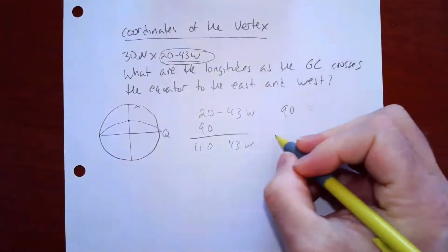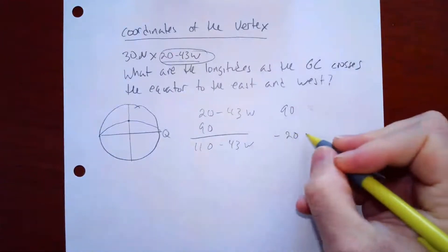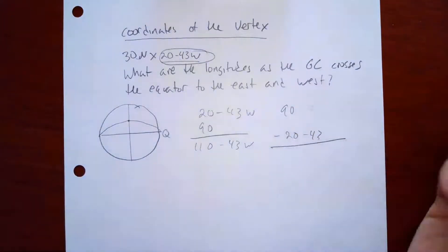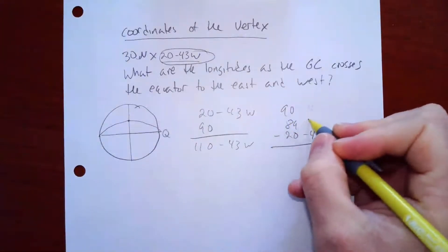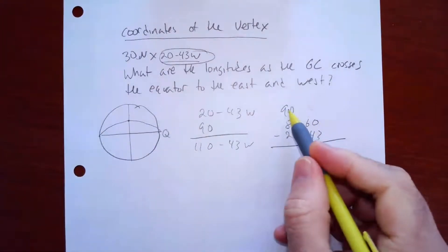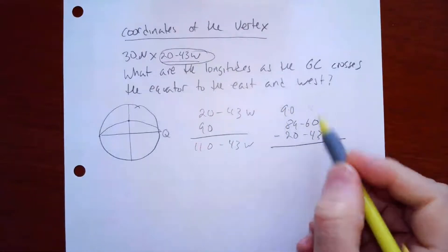90, minus 20 43. But since I'm doing that, what I'm going to do is I'm going to write 90 as 89 60. Because I just borrowed one, and I got 89, then I put it over there 60.